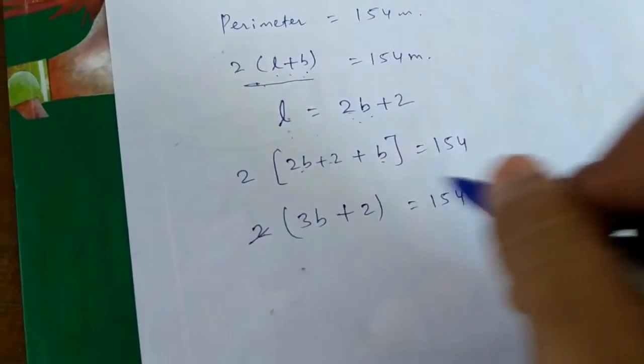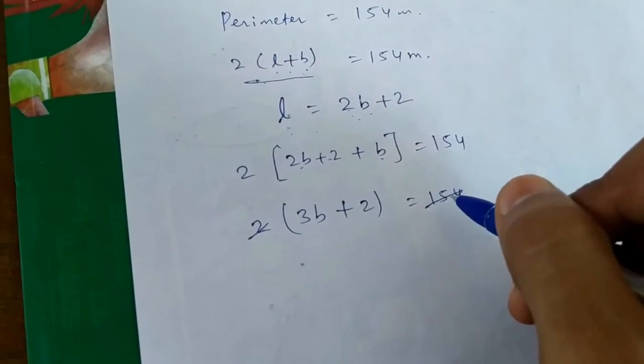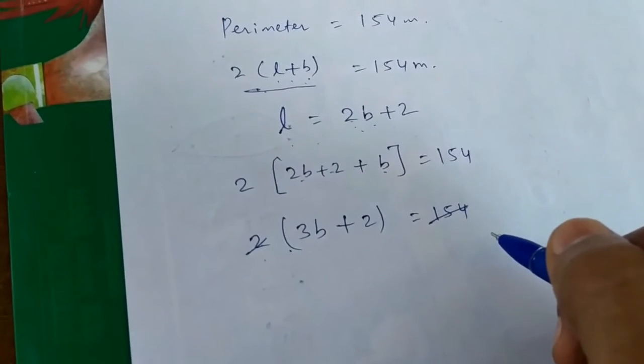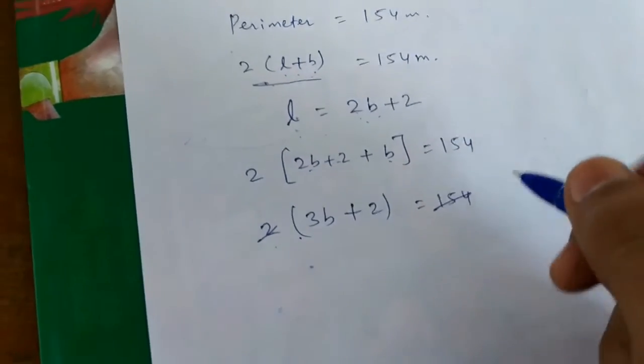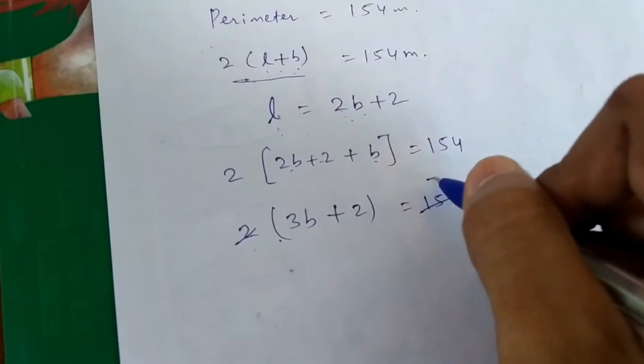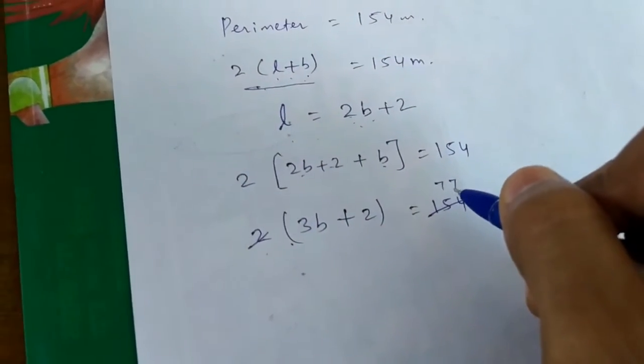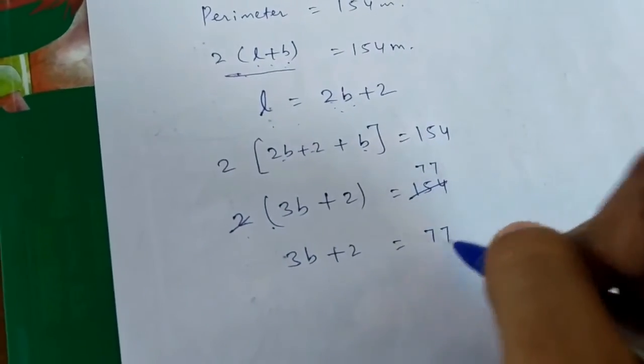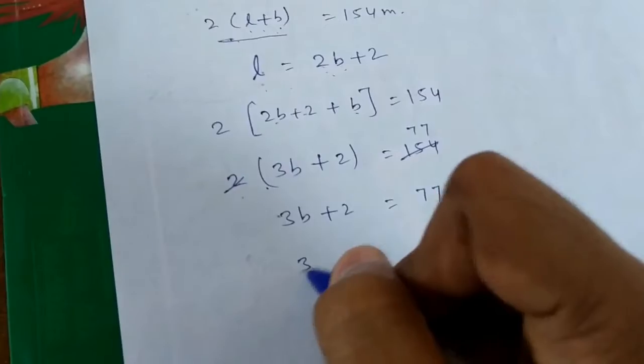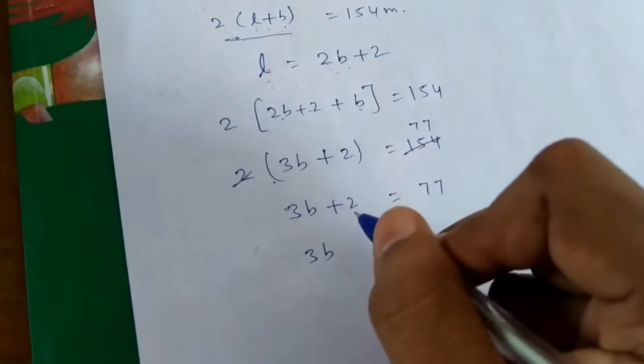Dividing both sides by 2, we get 3b plus 2 equals 77. So 3b equals 77 minus 2.